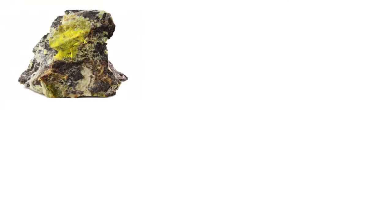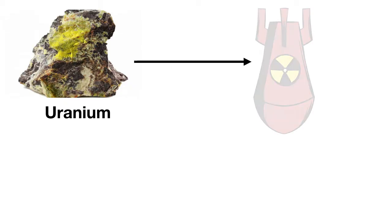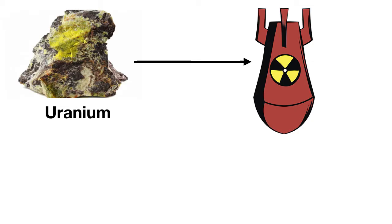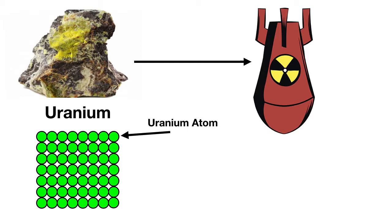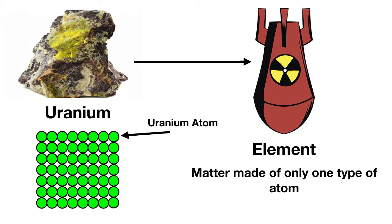Now it's time for you to practice your knowledge on your own. Here is a rare metal called uranium. Uranium is very dangerous because it's the main ingredient used to make nuclear weapons. If you were to zoom in on uranium, it would look like this, made of lots of little uranium atoms. Based on what you know, is uranium an element or a compound? Uranium is an element because it's a type of matter made of only one type of atom.